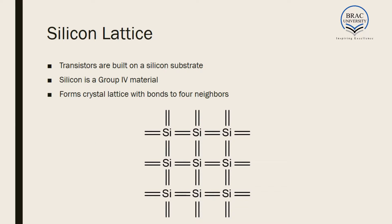Before we move on to learn about MOSFETs, we have to learn about the lattice. Since we know that the VLSI industry is also called the semiconductor industry, because every chip is built on a semiconductor substrate. The most popular substrate for our use is silicon substrate. Why do we use silicon substrate? We have learned in our intermediate level chemistry that silicon has a property called catenation — that is, it can form bonds with itself, and as a result, it can form large polymers or large chains. Because of this catenation property, silicon is suitable as a substrate for making devices.